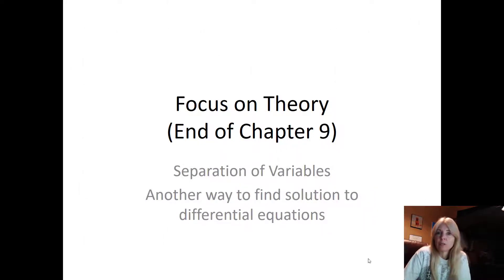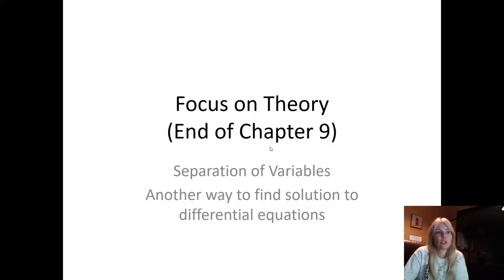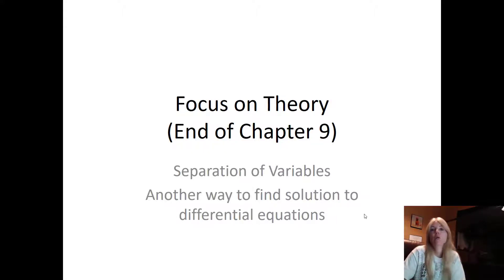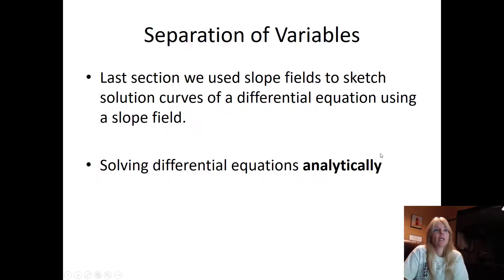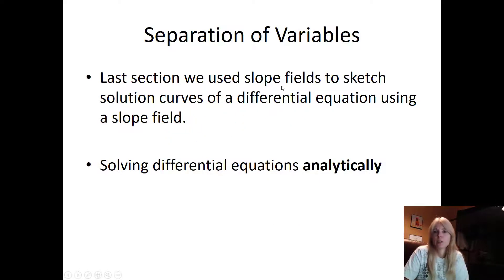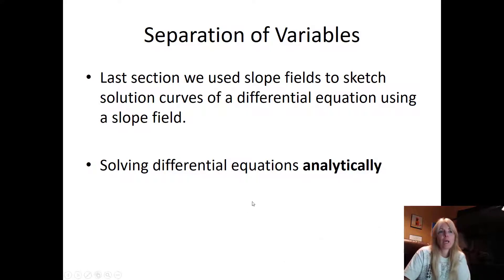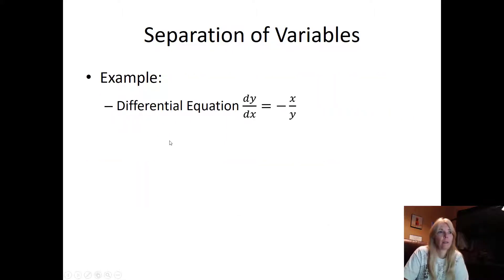We've looked at Euler's method and slope fields, and this is another way to find solutions to differential equations. It's called separation of variables, which is exactly what it sounds like — you separate the variables and then integrate both sides. The last section we used slope fields to try to see a solution curve, and now we want to solve differential equations analytically.